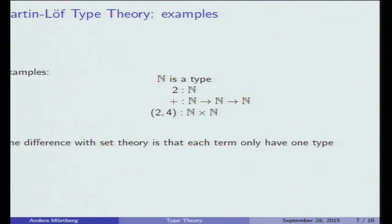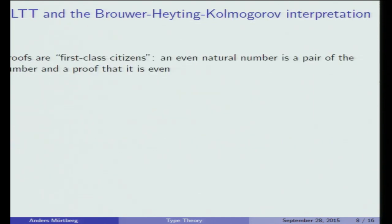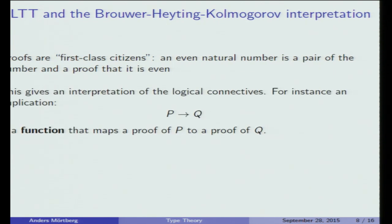One difference from set theory is that each term only has one type. While in set theory the empty set is contained in infinitely many other sets, here every element has exactly one type. Another important difference is that proofs are so-called first-class citizens — a programming language term meaning proofs are objects you can talk about in the language. For example, to construct even natural numbers, you'd make a type of pairs where the first element is a number and the second is a proof that the number is even.